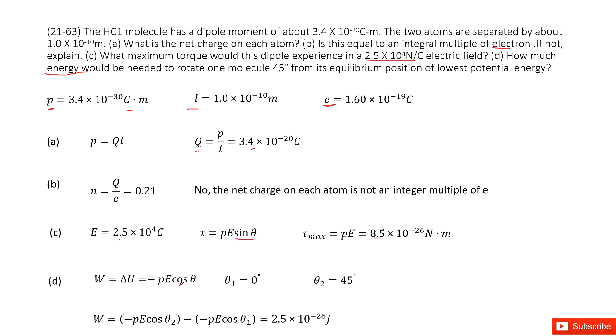We can write down the work done by this dipole is negative P E cosine theta. This function is in your textbook. You can double check. We need to rotate it to 45 degrees, so theta 2 is 45. And from where? The initial angle is the equilibrium position of the lowest potential energy, zero. So theta 1 is zero.